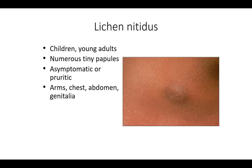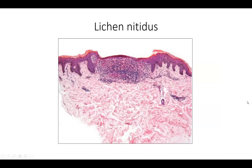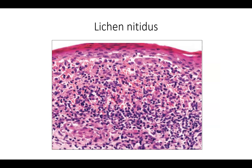Moving on to lichen nitidus: this rash usually develops in children and young adults with numerous tiny papules that are usually asymptomatic and mildly pruritic, occurring on the arms, chest, abdomen, and genitalia. The histology involves a lymphohistiocytic infiltrate — a ball of inflammation in the dermis interfacing with the overlying atrophic epidermis — with elongating rete ridges on the sides: the so-called ball and claw morphology.